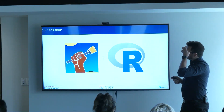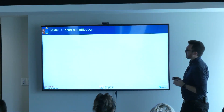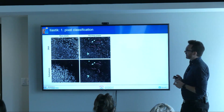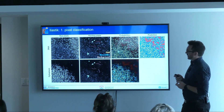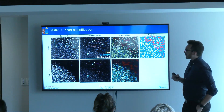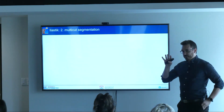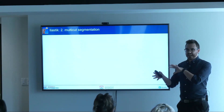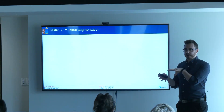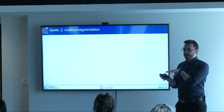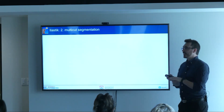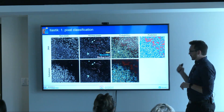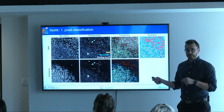Our approach uses Ilastik. Rather than trying to predict the nucleus and the cytoplasm and have the algorithm predict where the boundary between two cells is, we train literally on the boundaries. In this case, we actually don't need to predict nuclei at all.